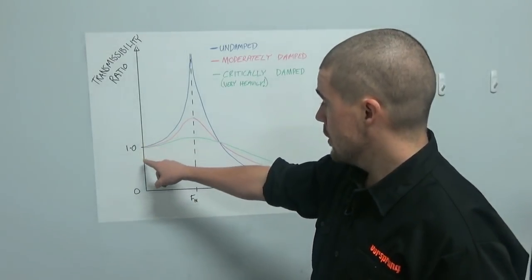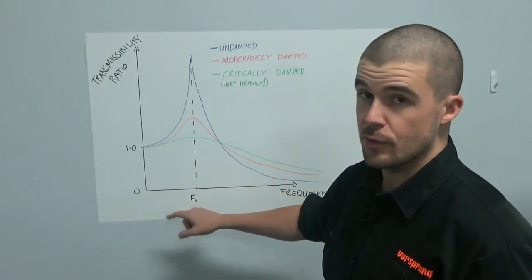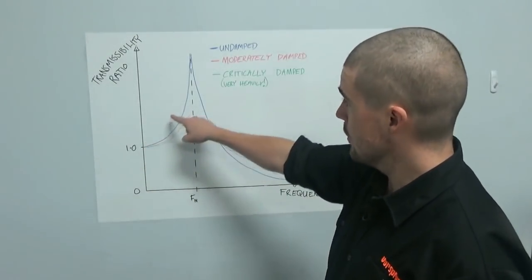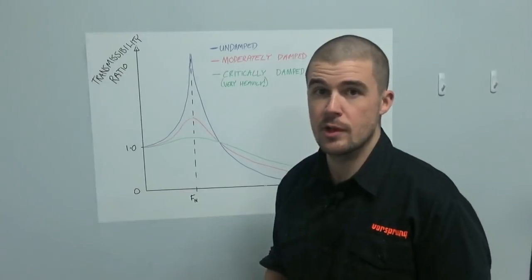What happens though, is that at a certain frequency, at that natural frequency, any inputs at that frequency, especially if they can be maintained at that frequency, end up with an infinitely high transmissibility ratio.